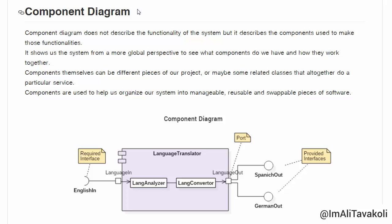It actually shows us the system from a more global perspective to see what components we have and how they work together. So what is a component? A component can be different pieces of our project, or maybe some related classes that together provide a particular service. Components help us organize our system into manageable, reusable, and swappable pieces of software through interfaces. A component performs a service by accepting some inputs and providing some outputs, and those inputs and outputs are defined by interfaces.